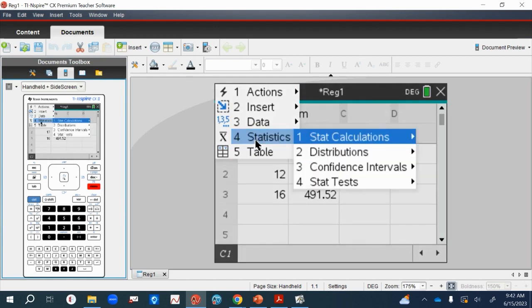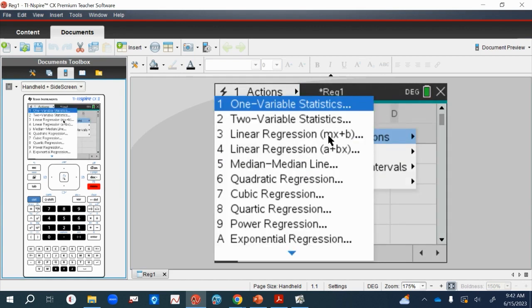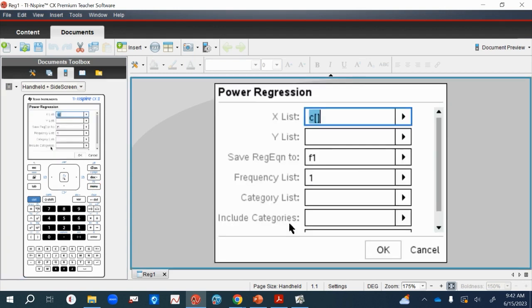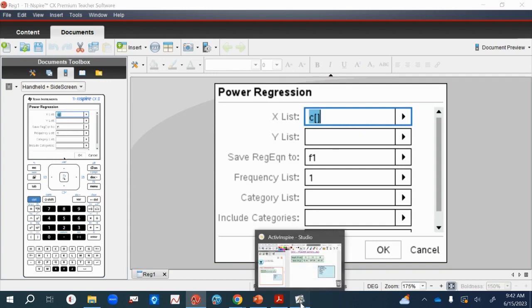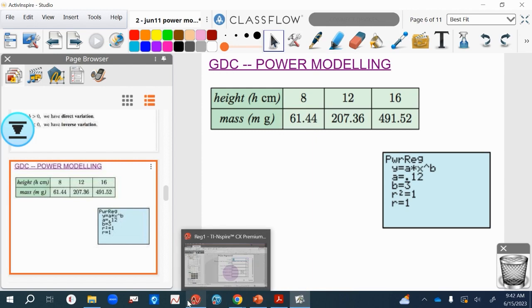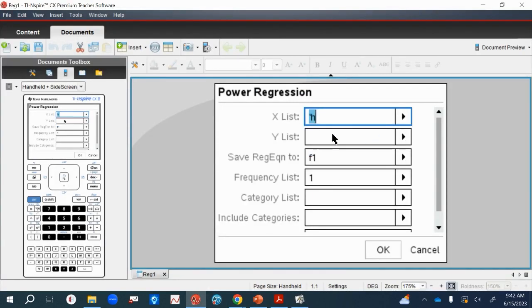Hopefully we'll come up with a power regression model that will match the one in the textbook answers. So you go to statistics, stat calculations. You should be pretty good at this now. And you don't have to look far for it—there it is, power regression. Now be sure you know which one's x and which one's y.